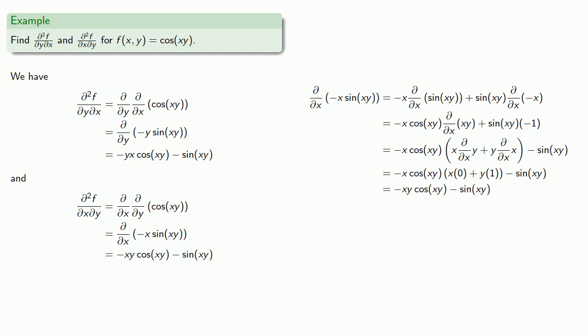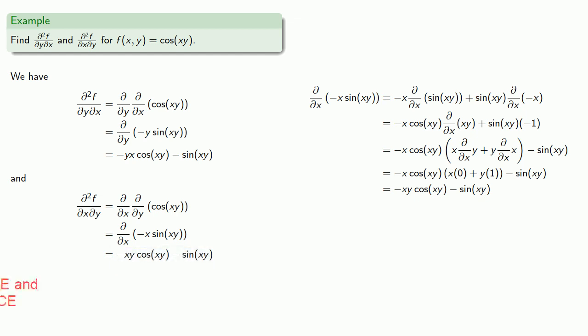Notice: the mixed partial where we differentiated first with respect to x and then with respect to y is the same as the mixed partial where we differentiated first with respect to y and then with respect to x. In our one example, using function notation, we found that f_xy equals f_yx.